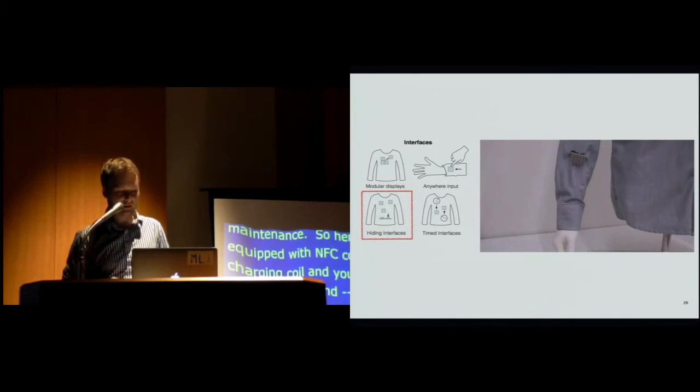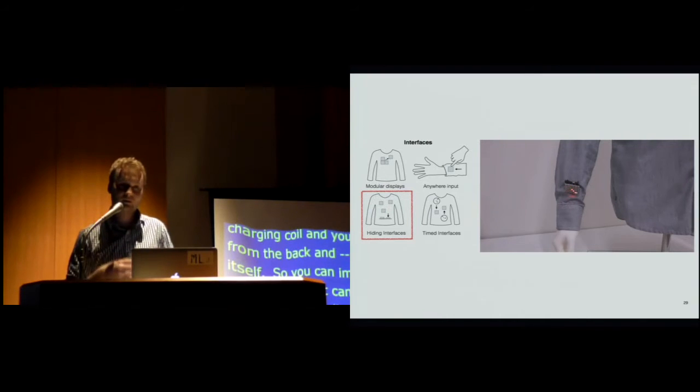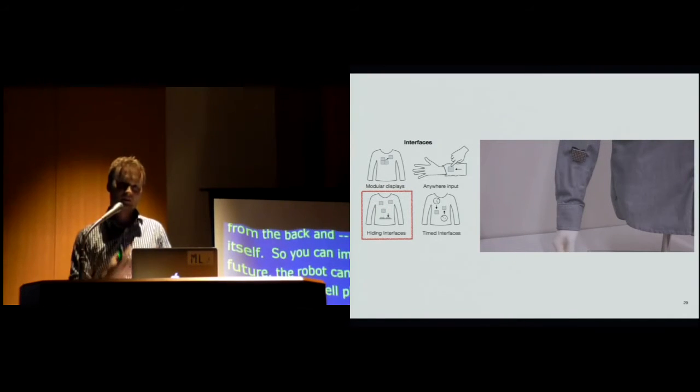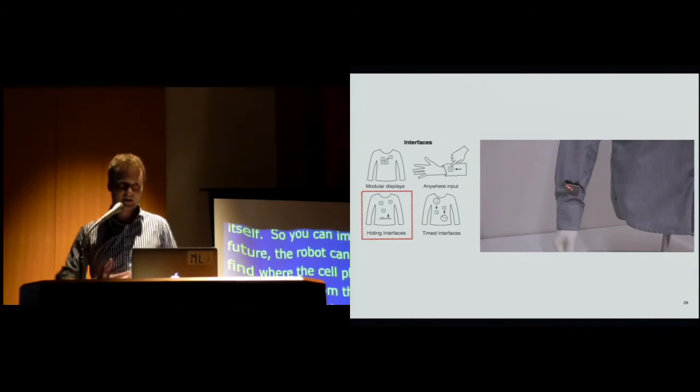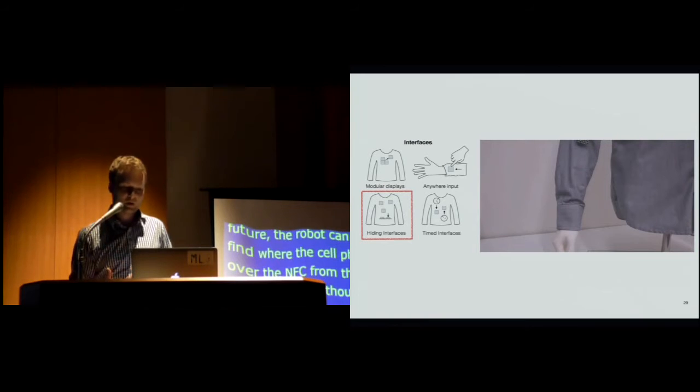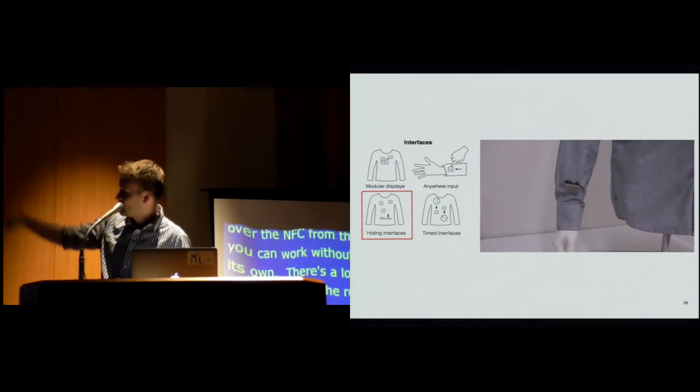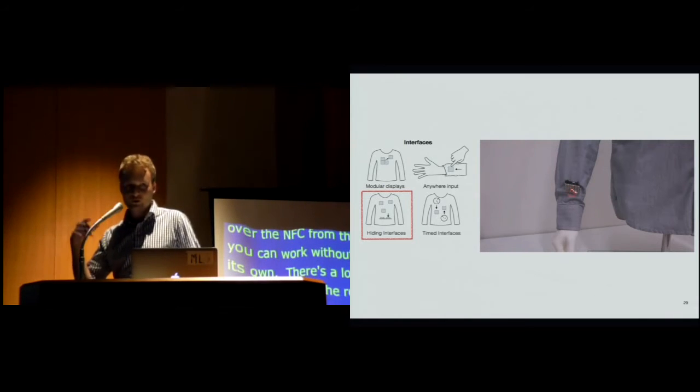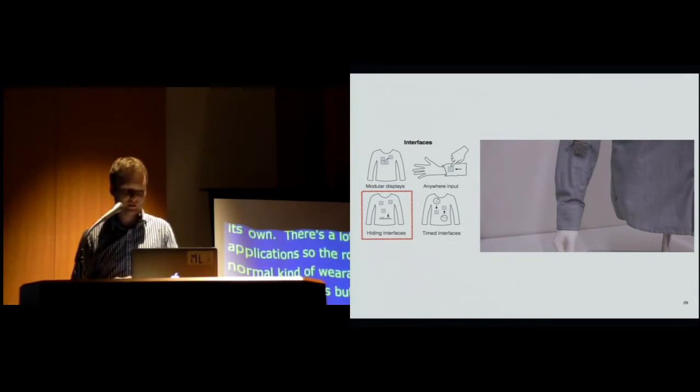There's a lot of interesting interface applications. So the robots can serve as a normal variable, current variable devices, but they can also be more seamless so they can hide and appear on demand. So maybe in this case, the robot has a display, which I showed earlier. It has a watch. So maybe when you need a watch, the watch can appear on your arm in the right location.